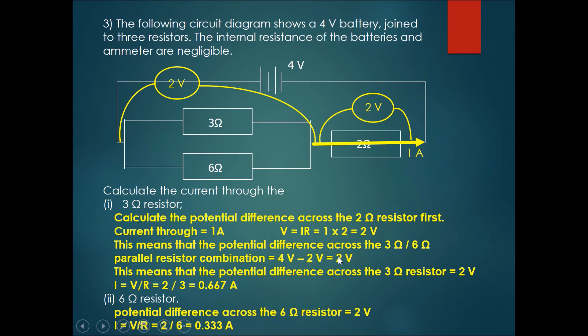...we can now find the potential difference across each of them. Given the concept of the voltage being equal across all parallel components, the potential difference across the 3 ohm resistor will be 2 volts as well.